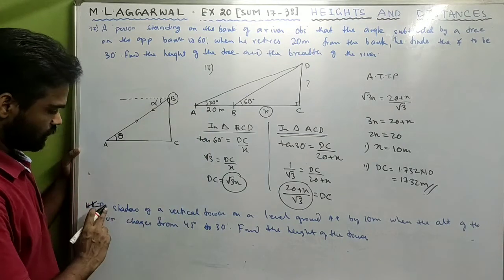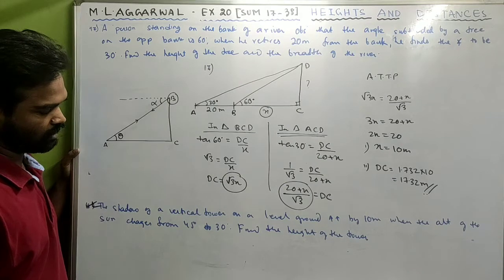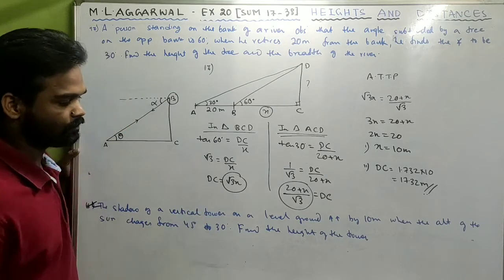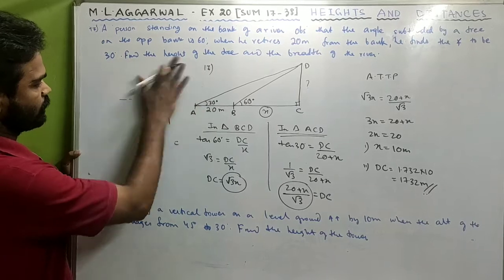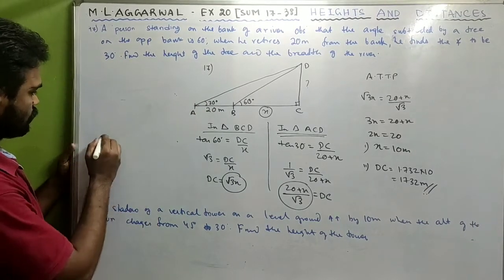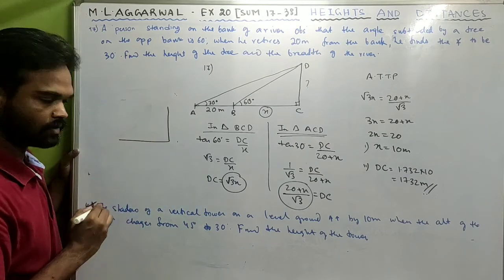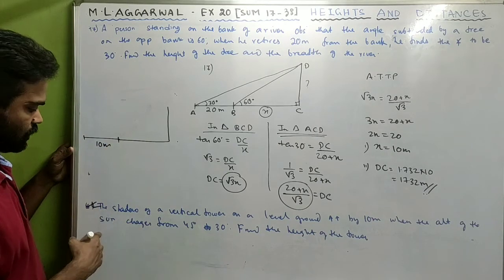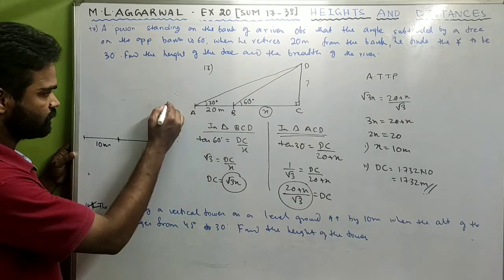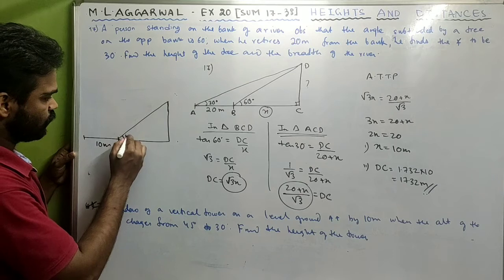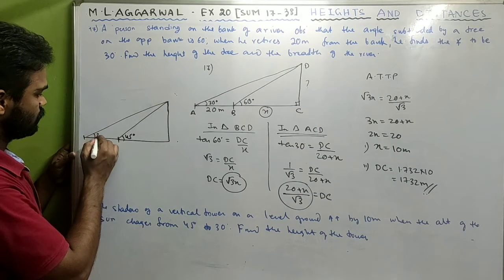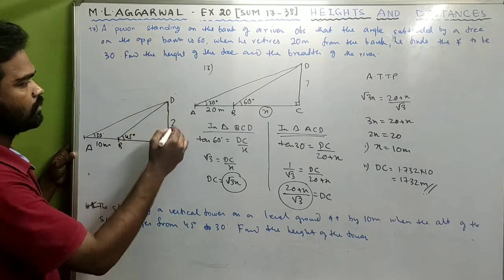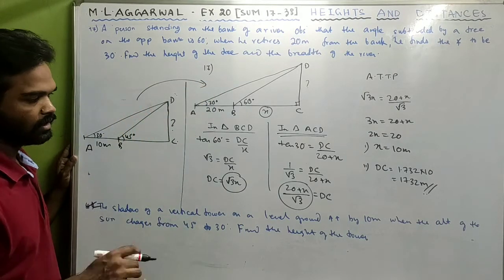Sum 18: The shadow of a vertical tower on level ground increases by 10 meters when the altitude of the sun changes from 45 degrees to 30 degrees. Find the height of the tower. The diagram is similar to sum 17 — the length of the shadow increases by 10 meters when the sun's altitude changes from 45 to 30 degrees. The two sums are similar in approach.